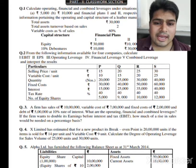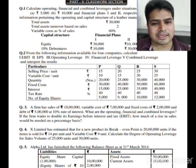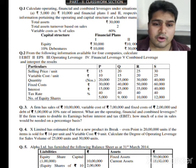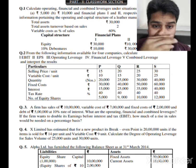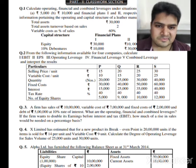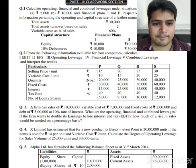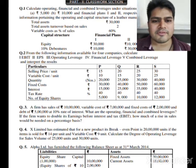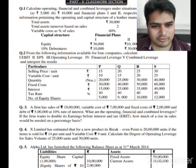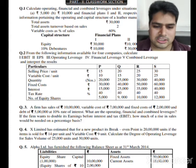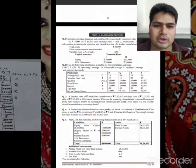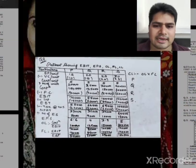Then we apply the leverage formulas: OL = Contribution / EBIT, FL = EBIT / EBT, and CL = Contribution / EBT. After solving the question, we get a statement showing EBIT, EPS, OL, FL, and CL.